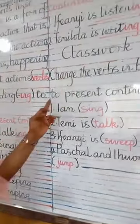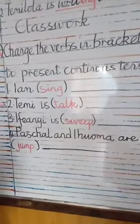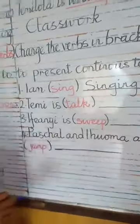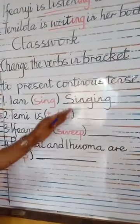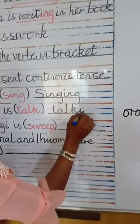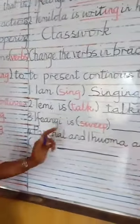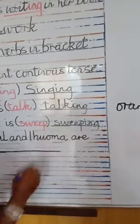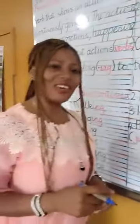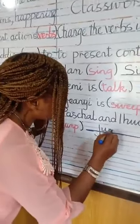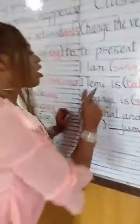Now change the verbs in brackets to present continuous tense. I am sing — what do you write to make it present continuous tense? Remember, add -ing to it, so sing changes to singing. Tell me is talking — the verb in brackets stop changes to talking. Sweep changes to sweeping. Jumping. So I have changed all those actions to present continuous tense.